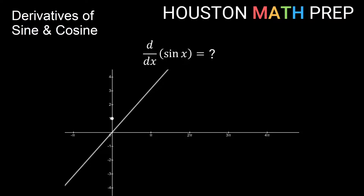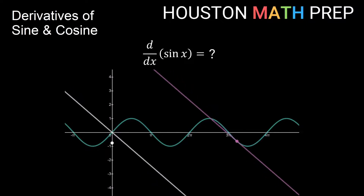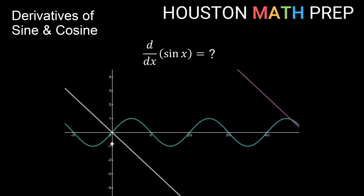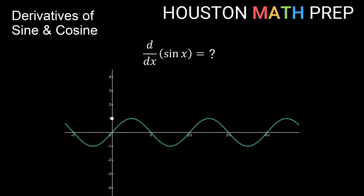If we now place the sine function in our picture and watch the slope of the tangent line as we move along the sine graph, you can see that it stays parallel to my line that I was moving before. This means my moving dot on the axis represents the tangent slope for the graph of sine. Now if I let my dot travel horizontally as it moves, you can see that it traces out the graph of the cosine function.